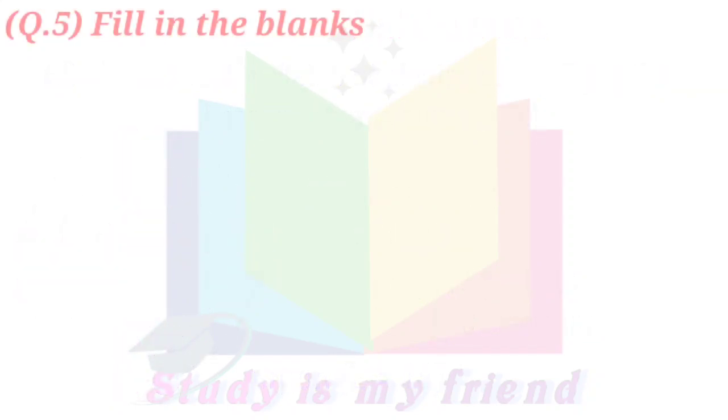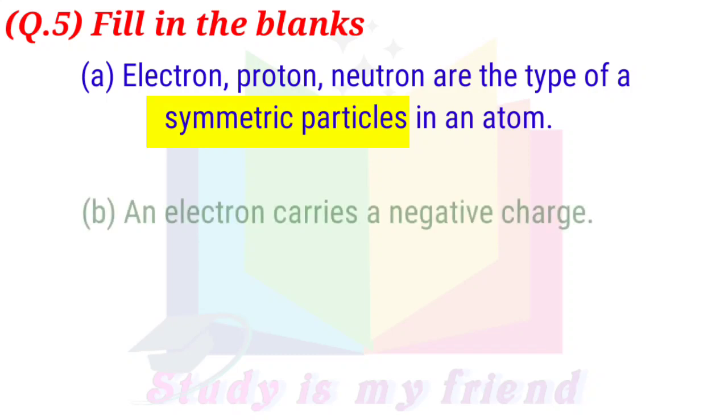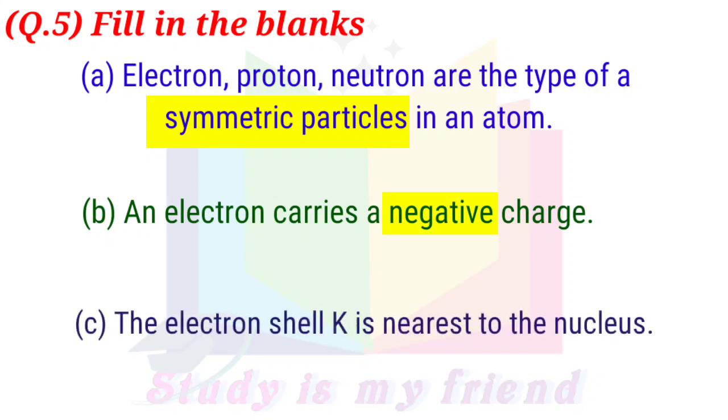Question 5: Fill in the blanks. A: Electron, proton, neutron are the three types of subatomic particles in an atom. B: The electron and neutron. C: The electron.